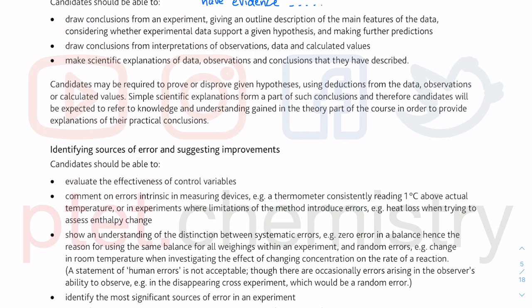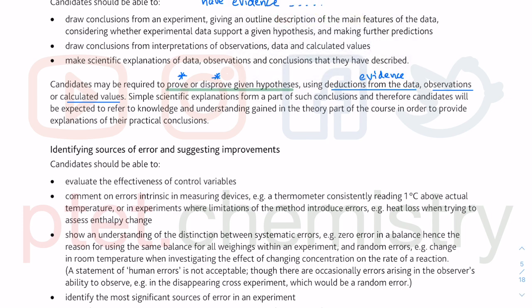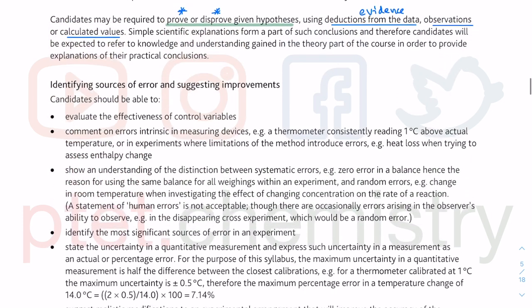You may be required to prove or disprove a hypothesis. For example, it could be said that the percentage yield is 90% — you do the titration, get a value, and determine whether the percentage yield is 90%, above 90%, or less than 90%. Show your data — this is using evidence, deduction from the data, observations, all your calculated values. For instance, a drug contains 5% iron — show by using titration whether it contains 5% iron or not. That's one of those common problems in titration.